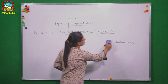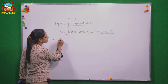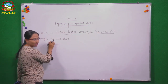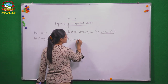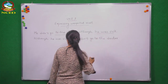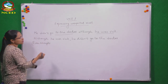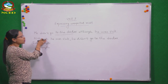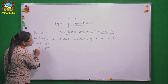'Although' can be written at the beginning of a sentence as well. When you bring 'although' to the beginning, you bring the whole clause: 'Although he was sick, he didn't go to the doctor.' Don't forget the comma when you put it at the beginning. Similarly, you can write 'even though' here as well — that doesn't make a difference in meaning. 'Though' is also used sometimes but it's not very common.